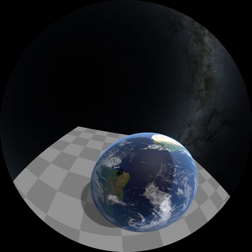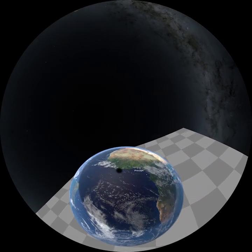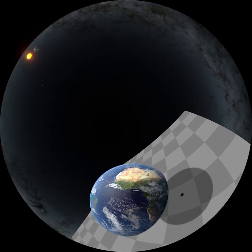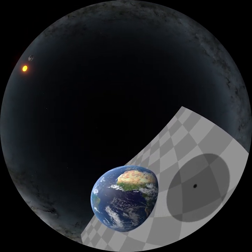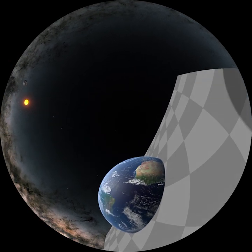One such eclipse on May 29, 1919 was visible from Sobral in Brazil and on the African island of Principe. In both places astronomers were waiting. They were part of a British expedition organized to put Einstein's theory to the test.